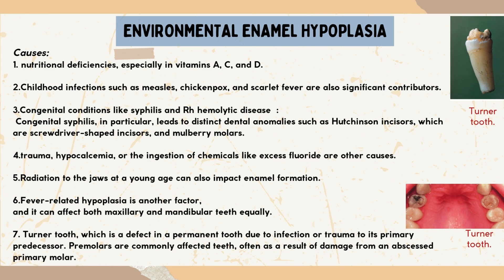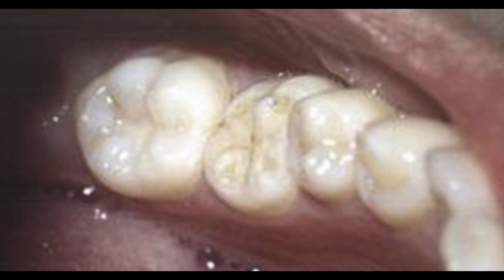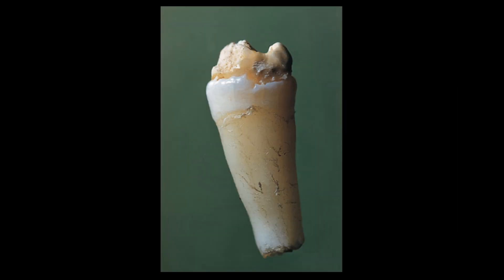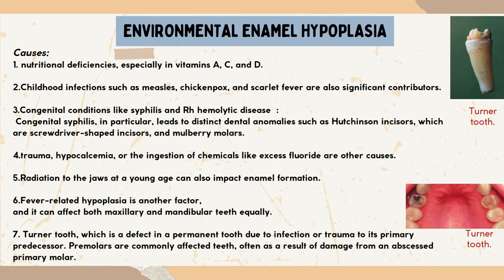Congenital syphilis in particular leads to distinct dental anomalies such as Hutchinson incisors, which are screwdriver-shaped incisors, and mulberry molars. Lastly, there's the Turner tooth, which is a defect in a permanent tooth due to infection or trauma to its primary predecessor. Premolars are commonly affected as a result of damage from an abscessed primary molar.